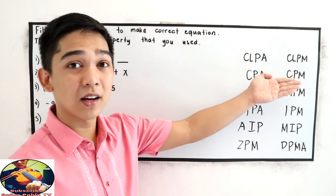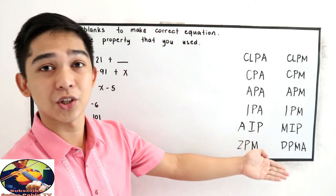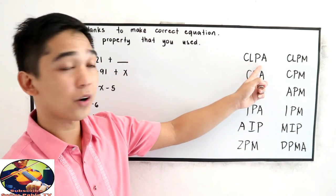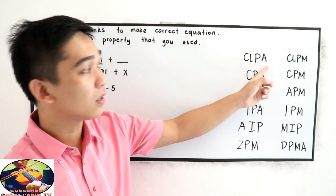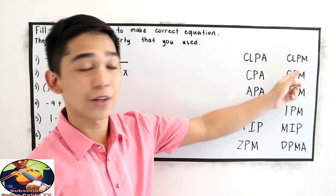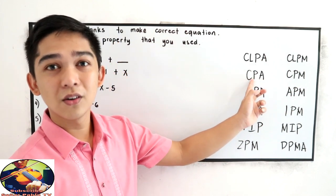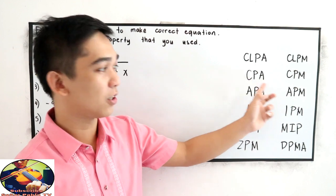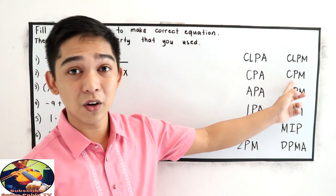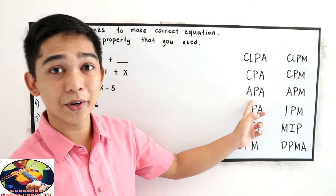We may refer to the following abbreviations. We will use CLPA for closure property of addition, CLPM for closure property of multiplication, CPA for commutative property of addition, CPM for commutative property of multiplication, and APA for associative property of addition.